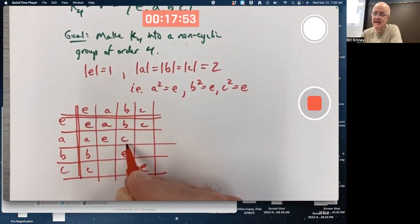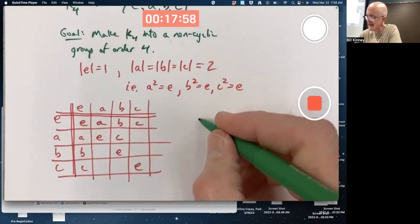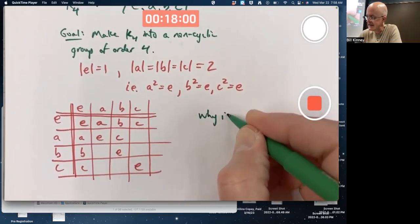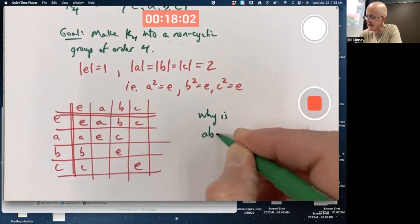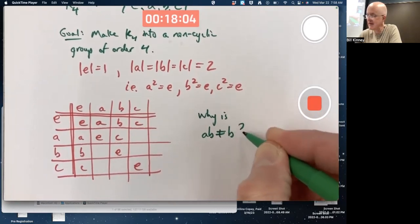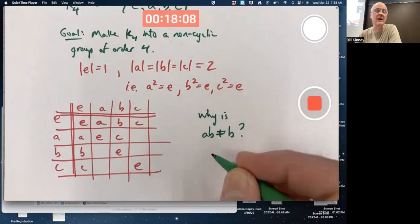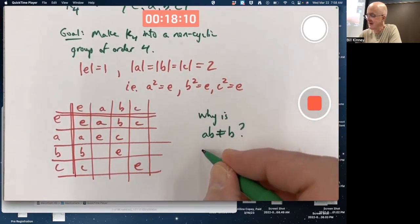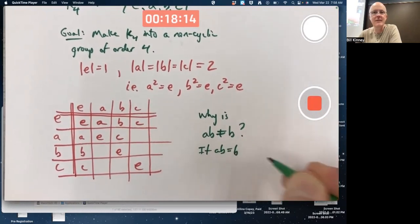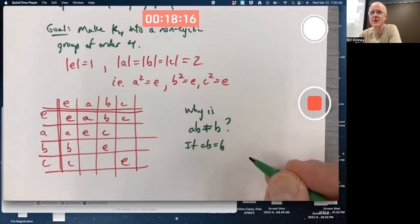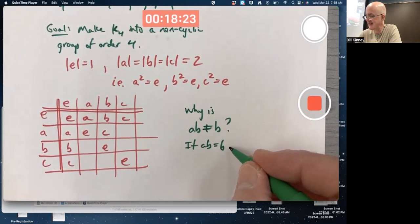Why couldn't it be B? Why is A times B not equal to B? You could give an argument by contradiction. If AB equals B, what could you conclude? A would have to be the identity.